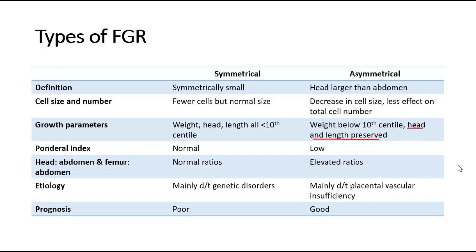The ponderal index, which is the ratio of body weight to length, will be low in the asymmetrical type. Symmetrical FGR is mainly due to genetic disorders, whereas asymmetrical FGR is mainly due to placental vascular insufficiency. Asymmetrical FGR can be caused by maternal conditions such as chronic hypertension, preeclampsia, renal disease, cyanotic heart disease, and many other causes that could reduce placental vascular function.